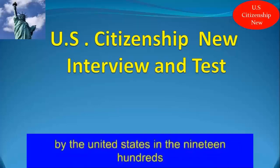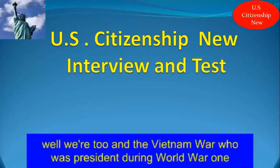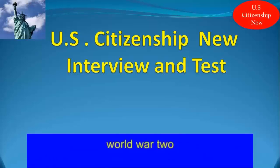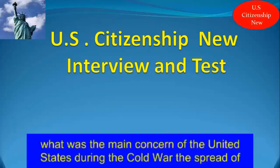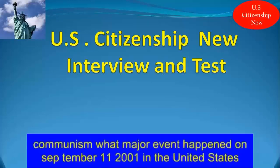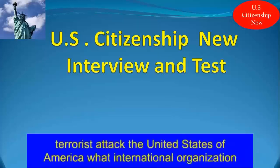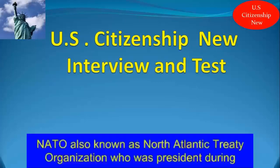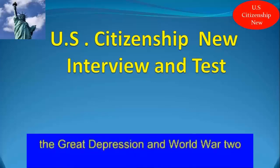Name one war fought by the United States in the 1900s. World War II and the Vietnam War. Who was President during World War I? Woodrow Wilson. The United States fought Japan, Germany, and Italy during which war? World War II. What was the main concern of the United States during the Cold War? The spread of Communism. What major event happened on September 11, 2001 in the United States? Terrorists attacked the United States. What international organization was established after World War II to keep the world at peace? NATO, also known as the North Atlantic Treaty Organization.